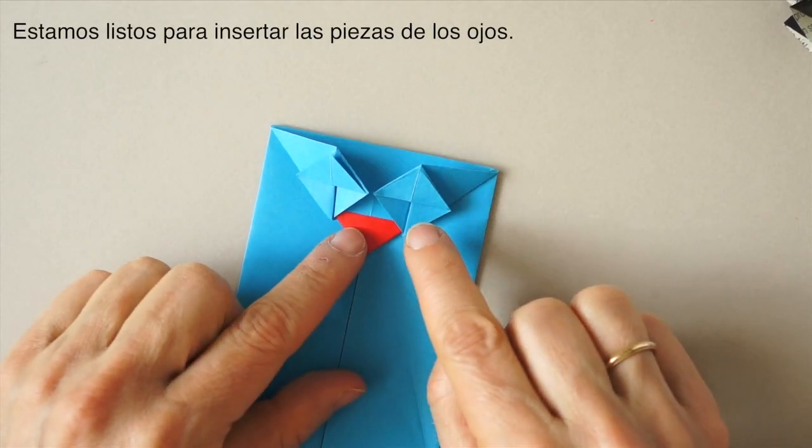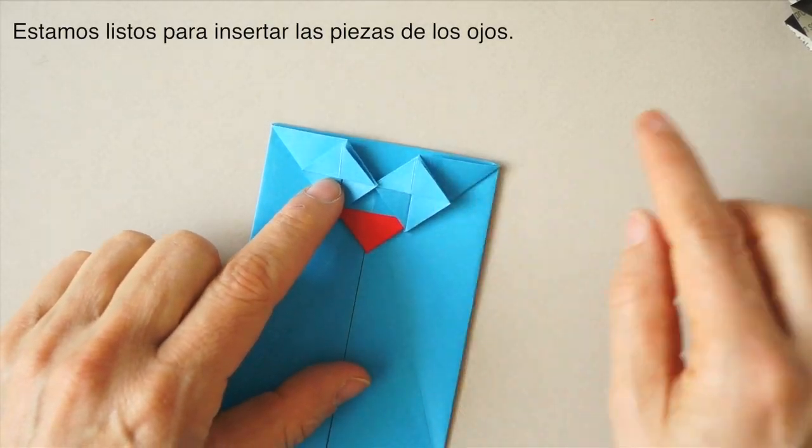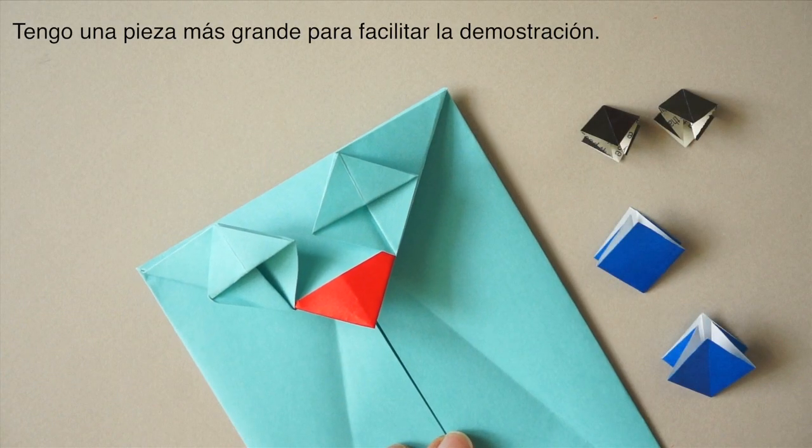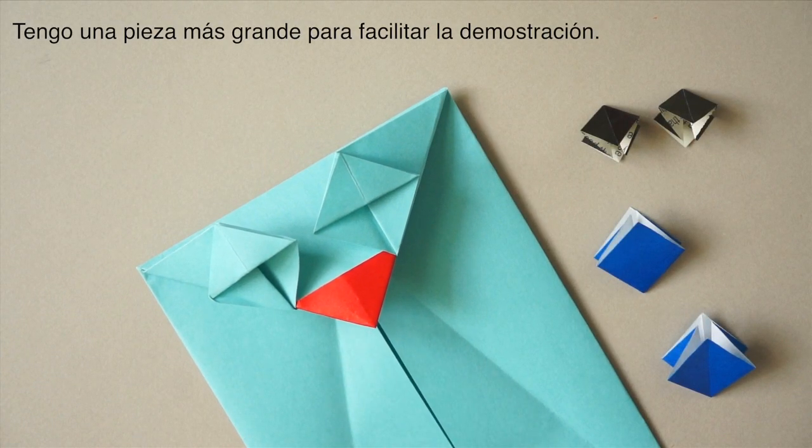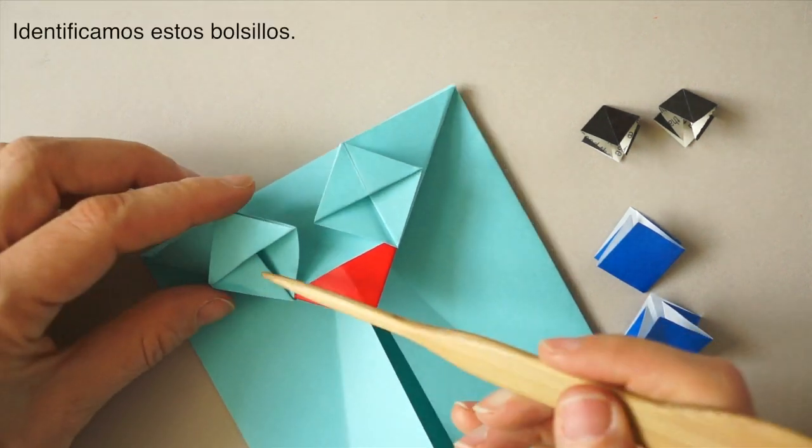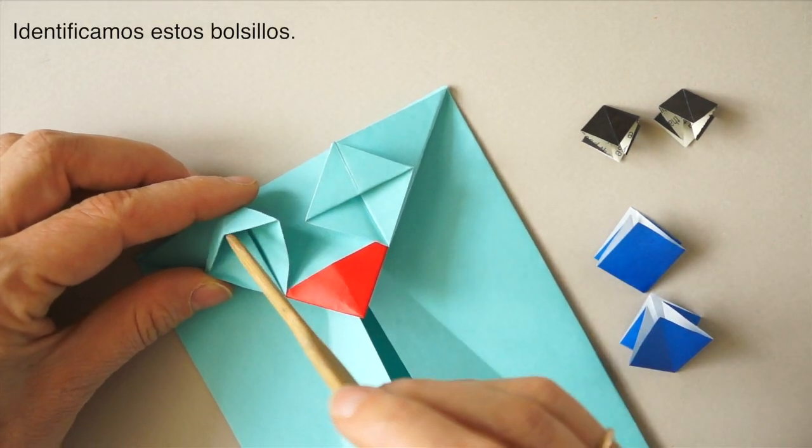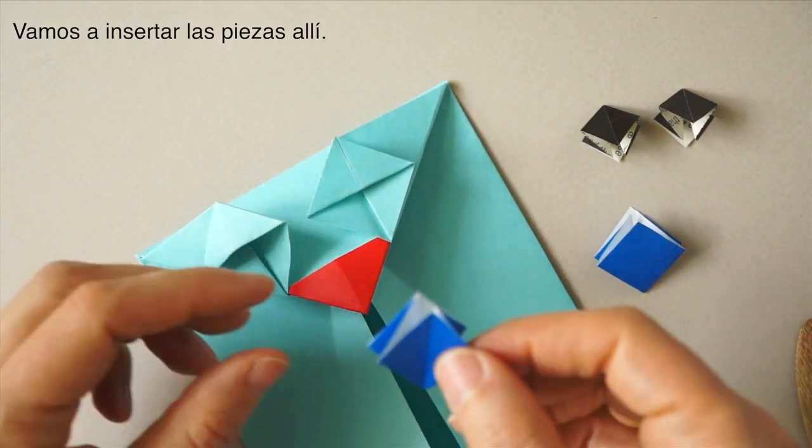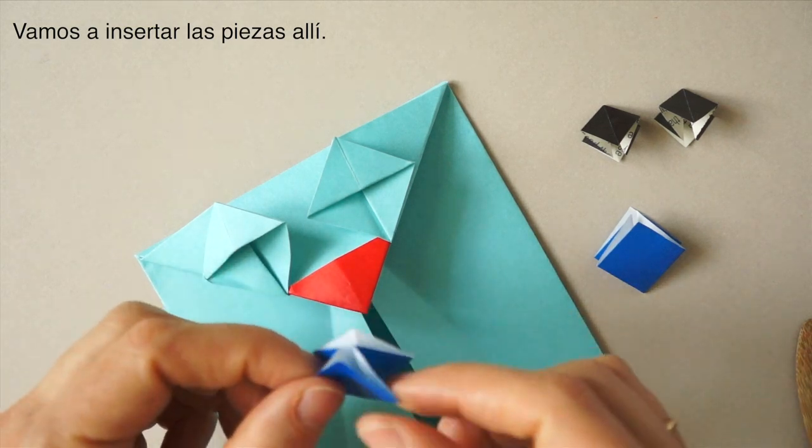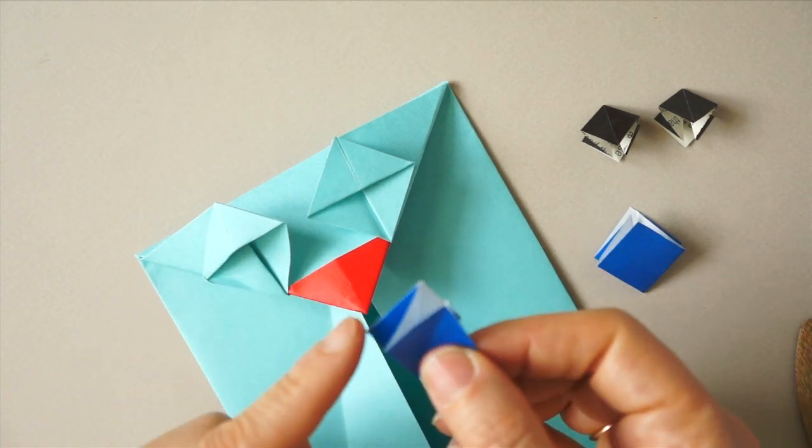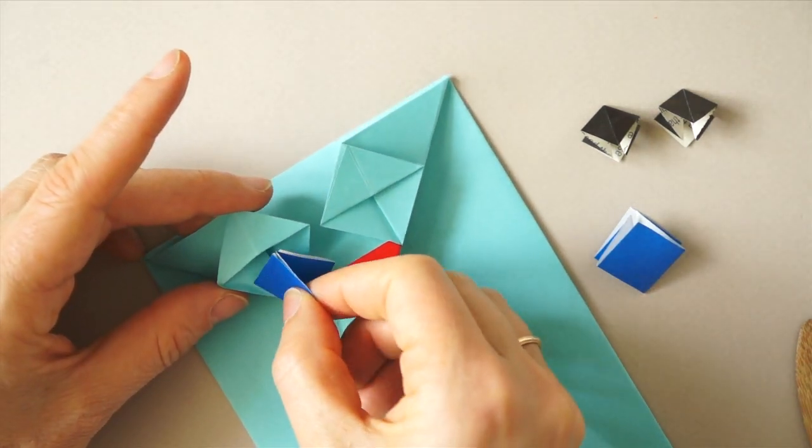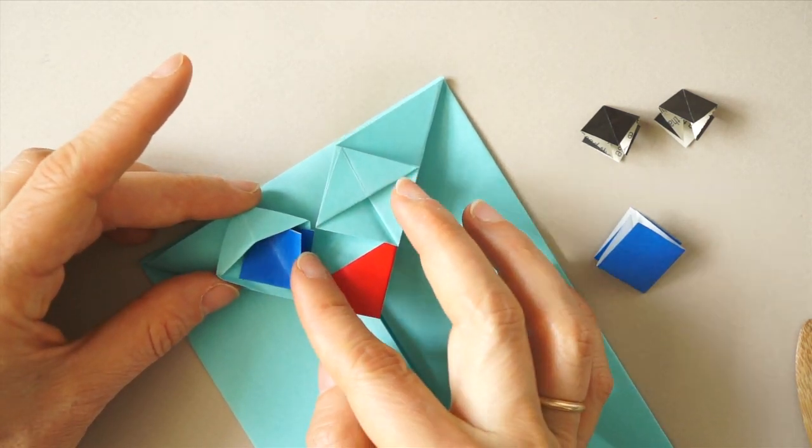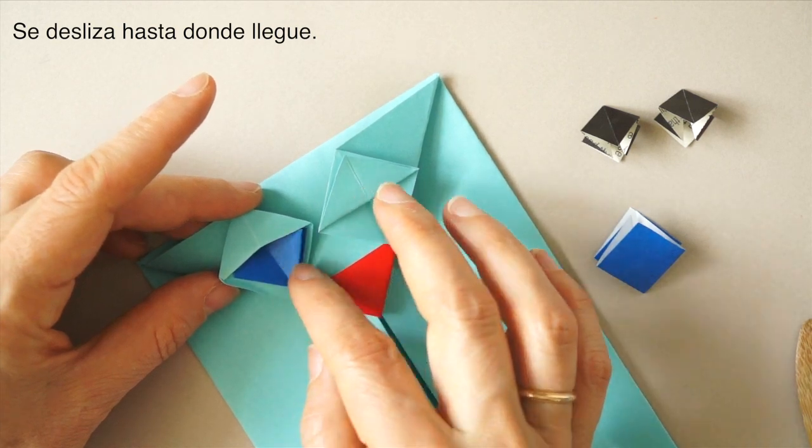Now we are ready to insert the pieces for the eyes. We have a larger piece of paper here to facilitate the demonstration. We have to identify this packet here. We are going to insert this flap and slide it up as far as it goes.